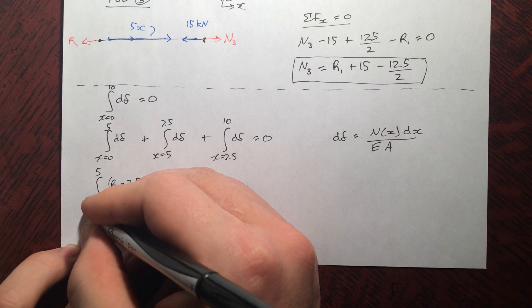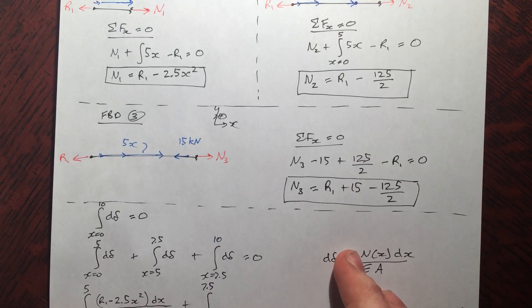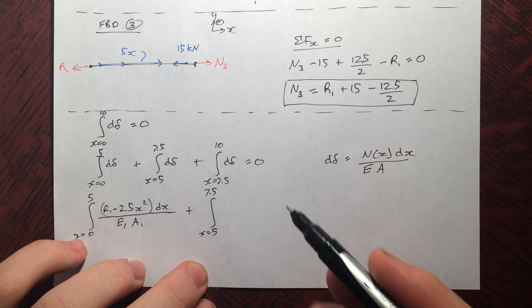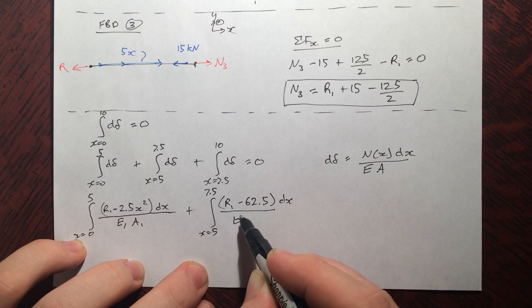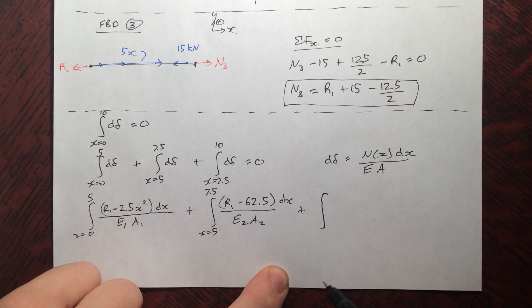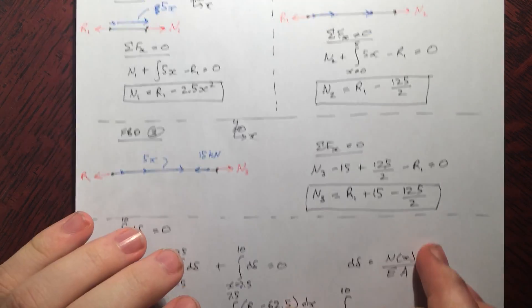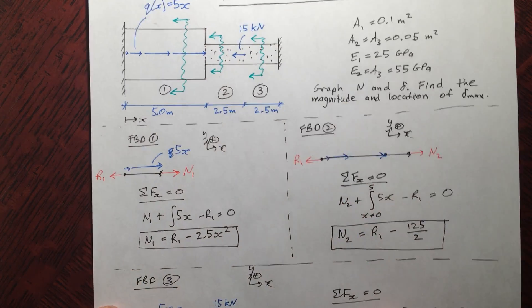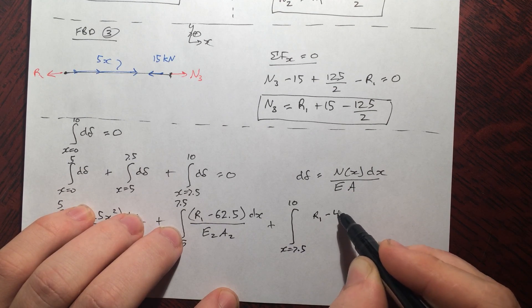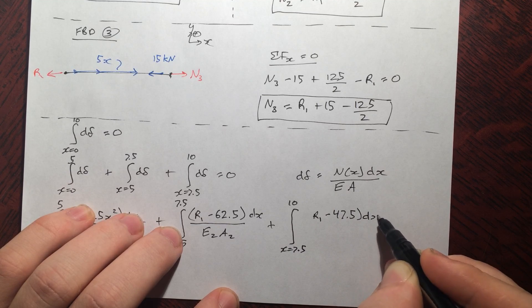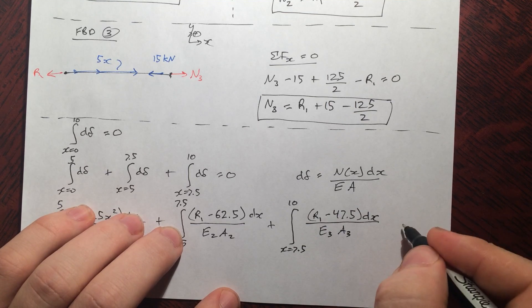So the integral from 0 to 5 of R1 minus 2.5x squared dx over E of that piece, A of that piece, so E1, A1. I'm just going to leave the numbers out because that just takes time to plug in and we all know what they are. The integral from x equals 5 to 7.5 of N2, that was this one here, R1 minus 62.5 dx over E2 A2, plus the final bit of displacement that we're summing up from x equals 7.5 to 10. That's going to be that range is where N3 is acting on. So we're going to put N3 in there, which is just this. So it turns out to be R1 minus 47.5 dx over E3, A3. And this all has to equal 0.